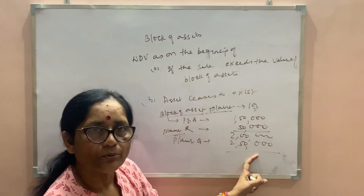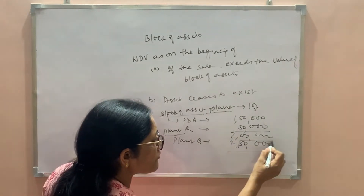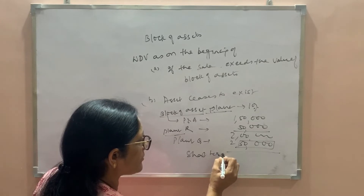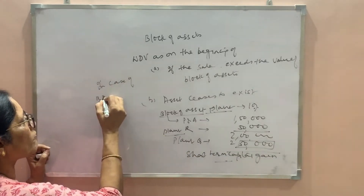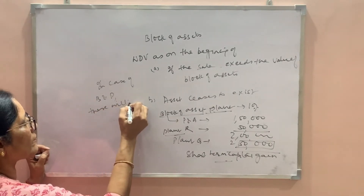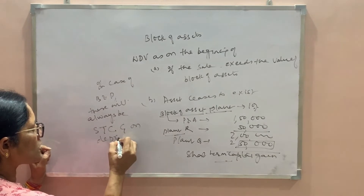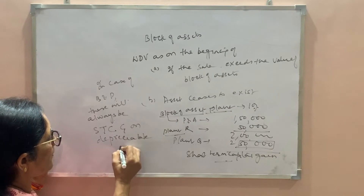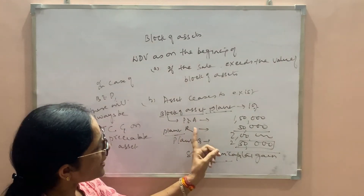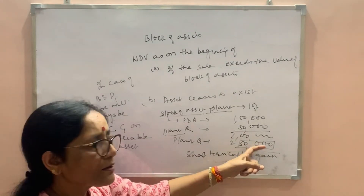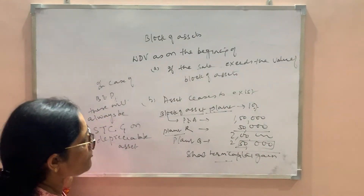But now there is no value left on which we can charge depreciation, because the sale proceeds of Rs. 2,50,000 fully offset the block value of Rs. 2,00,000, and the remaining Rs. 50,000 will be a short term capital gain. In case of business or profession, there will always be short term capital gain on depreciable assets. So if one asset is sold at such a higher price that the block value ceases to exist, there will be a short term capital gain.